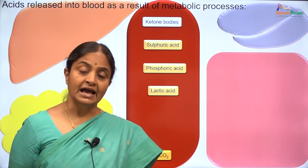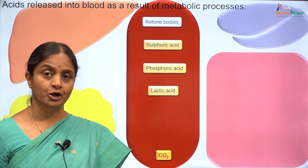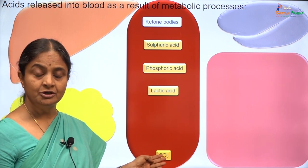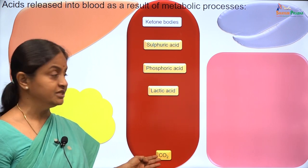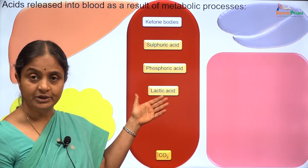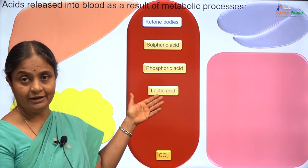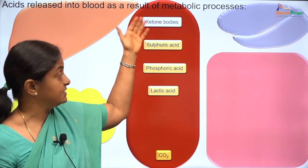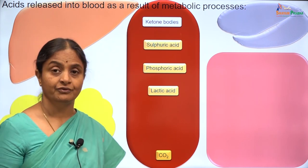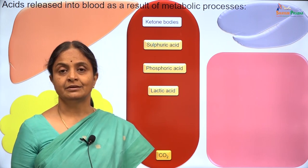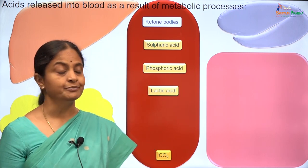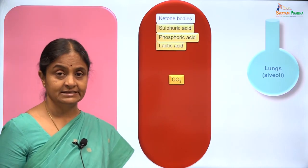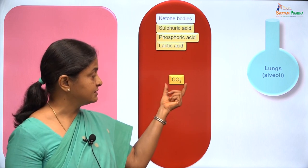Summarizing, the acids which come into blood due to various metabolic processes are: carbon dioxide due to complete metabolism of glucose, fats, and proteins; lactic acid due to incomplete metabolism of glucose through the glycolytic pathway; ketones coming from free fatty acids; and sulfuric and phosphoric acids coming from sulfur and phosphorus-containing proteins. We can group these acids — with carbon dioxide separately.